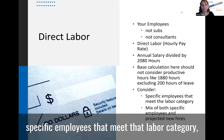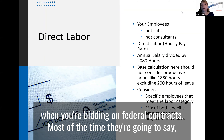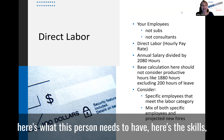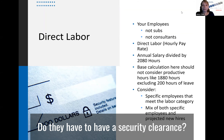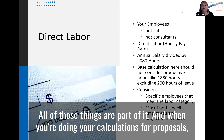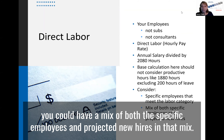You want to consider the specific employees that meet each labor category. When you're bidding on federal contracts, most of the time they're going to specify what this person needs — here's the skills, here's the education, sometimes recommended or required, and whether they need a security clearance. When doing your calculations for proposals, you could have a mix of both specific employees and projected new hires.